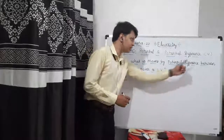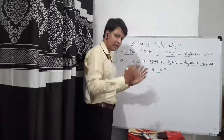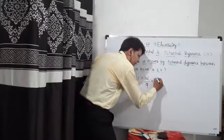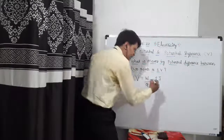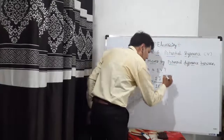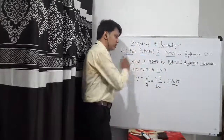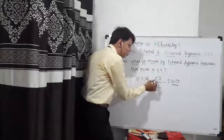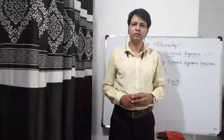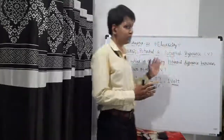What is meant by a potential difference of one volt between two points? Potential difference equals work per unit charge, so one volt means one Joule of work done to move a unit positive charge of one Coulomb from one point to the other. So volt is the unit to measure potential difference. Friends, this was the topic of electric potential, potential difference, and the definition of one volt. Thank you.